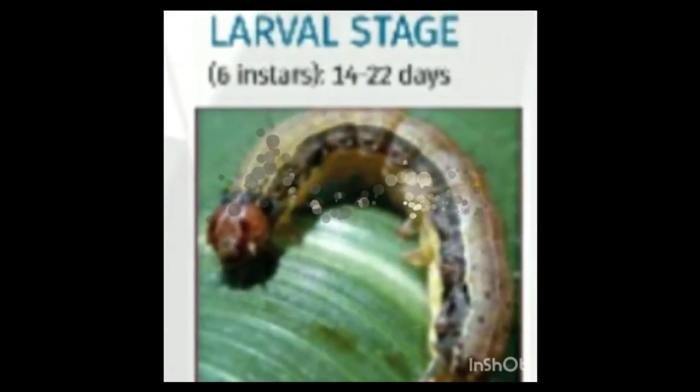There are usually 6 instars in the fall armyworm. Head capsule widths are about 0.35, 0.45, 0.75, 1.3, 2, and 2.6 mm respectively for the instars. Young larvae attain lengths of about 1.7, 3.5, 6.4, 10, 17.2, and 34.2 mm respectively during these instars.